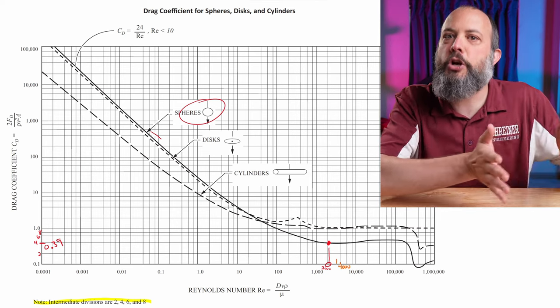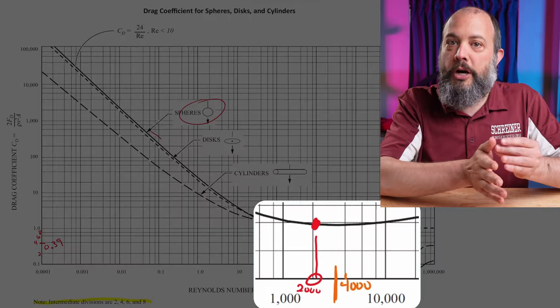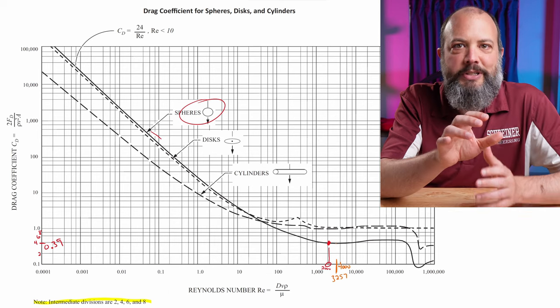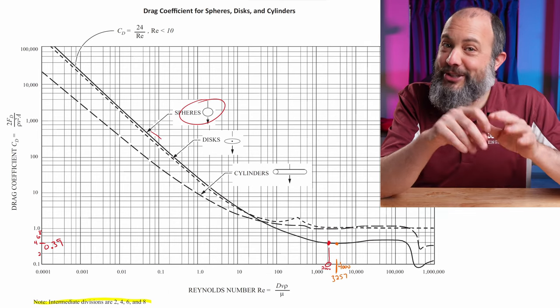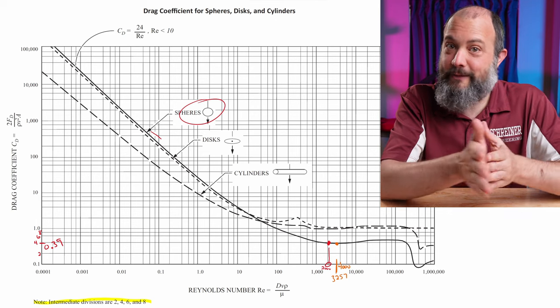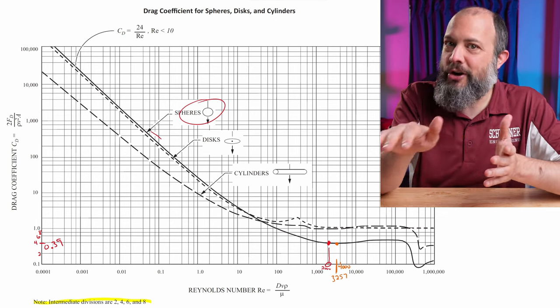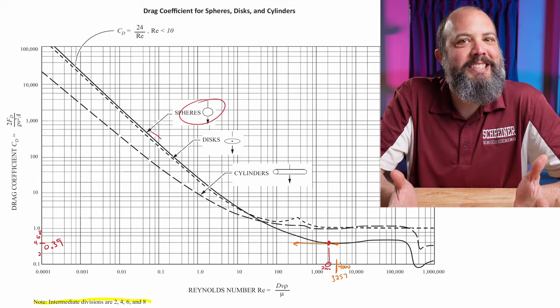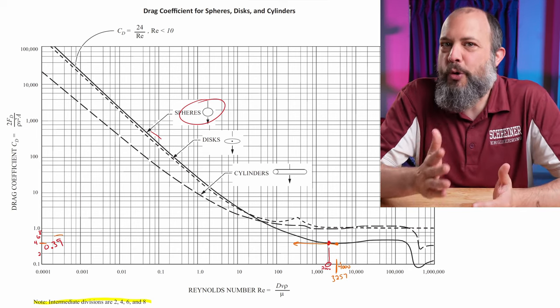3,200 will definitely be much closer to the 4,000 than the 2,000. Trace that upwards to the solid dark line. And good news, it's actually basically horizontally right next to my dot from before. So this section of the curve is basically horizontal. And I can trace that back over to the left and we'll call this again a drag coefficient of 0.39.